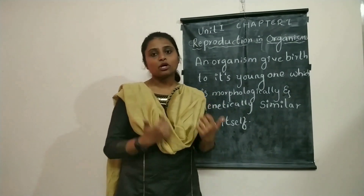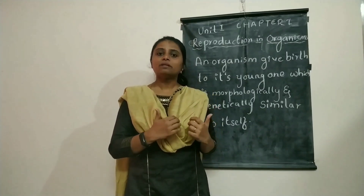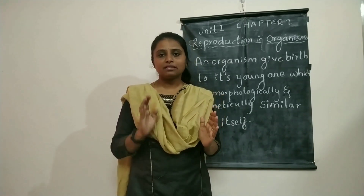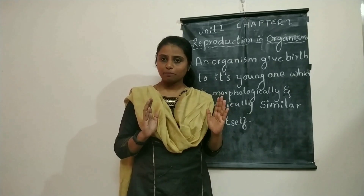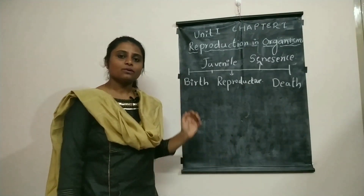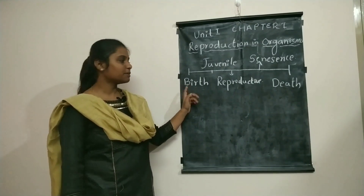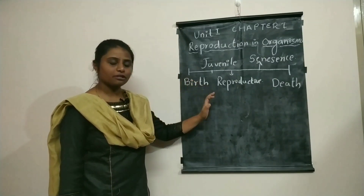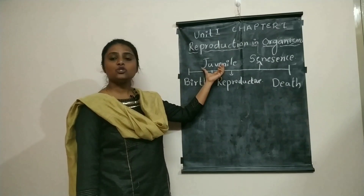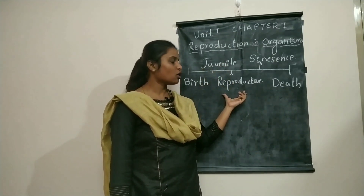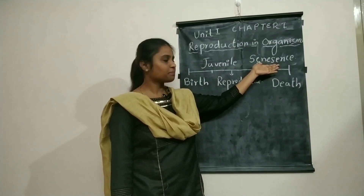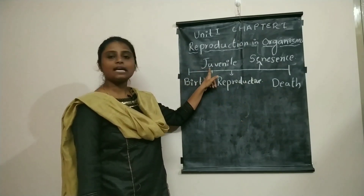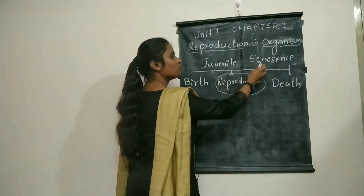When does reproduction occur? There are many stages in the life of an organism. The time between the birth and death of an organism is called its lifespan. This lifespan can be divided into different phases: birth, juvenile phase, reproductive stage, senescence or aging, and finally death. Reproduction occurs immediately after the juvenile period — that is, during the reproductive phase — and before aging.